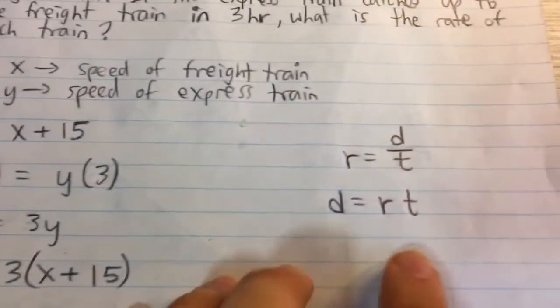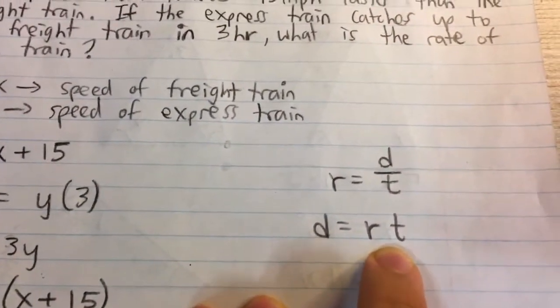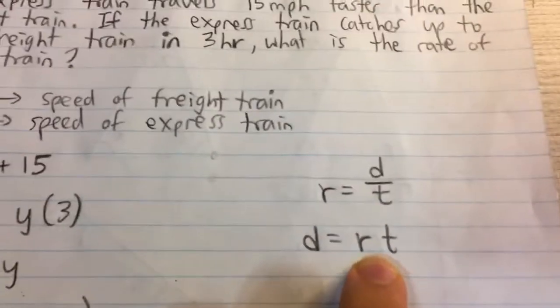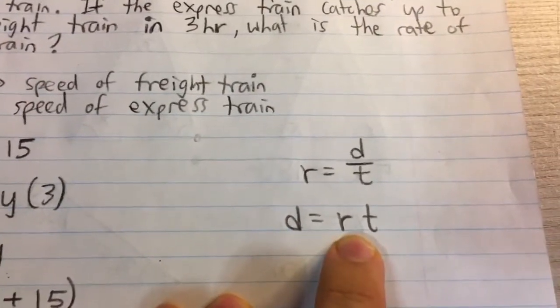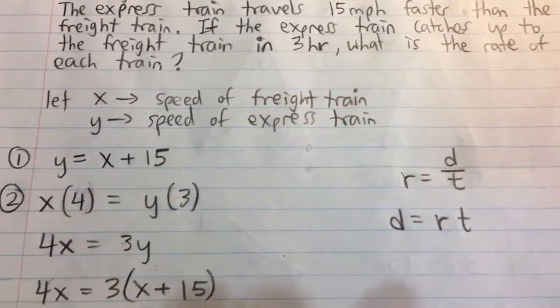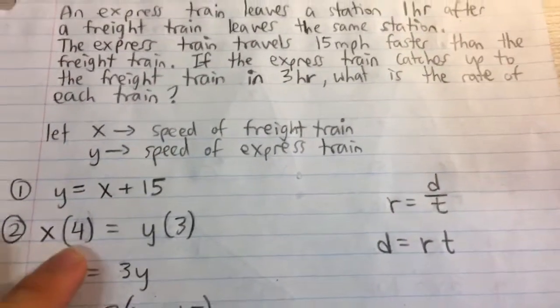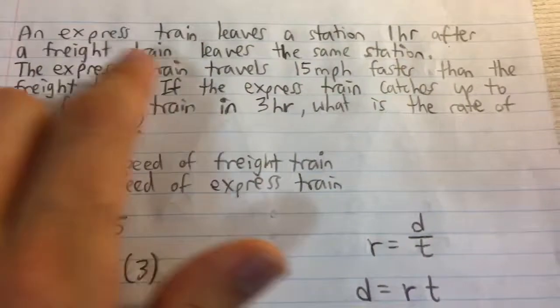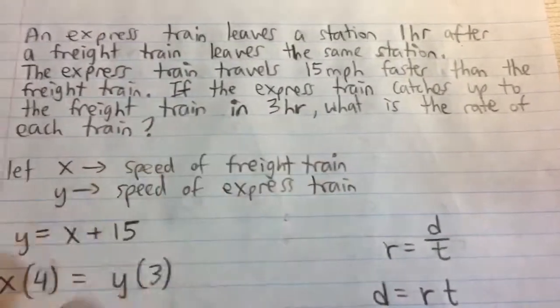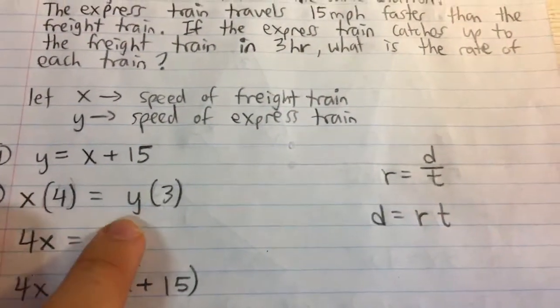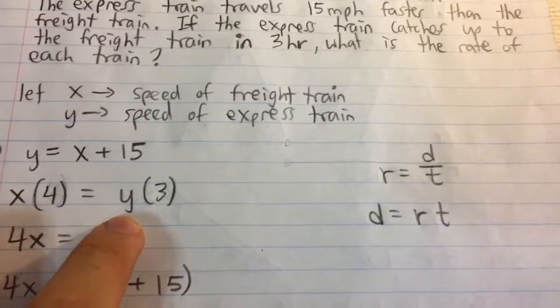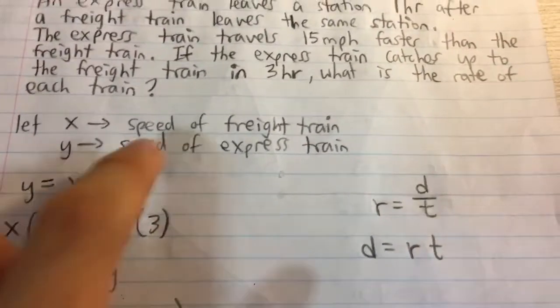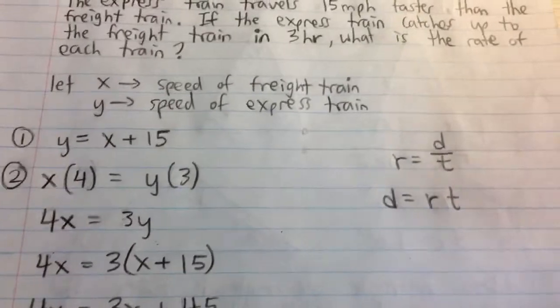So what we can do is say the rate times time of the first train, or the freight train, has to equal the rate times time of the express train. For the freight train, it's x times four hours, because it's already traveled the one hour and the three hours that it took to catch up. For the express train, the speed is y times three hours, because it only traveled the three hours. It took three hours to catch up.